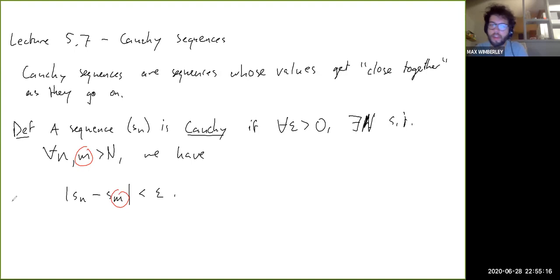And notice that now there's no reference to S, the limiting value S. It's just looking at the differences between two terms of the sequence itself.